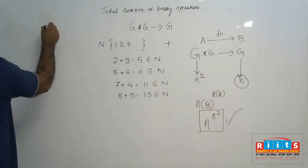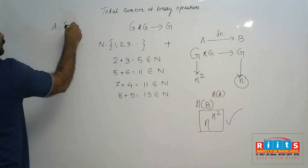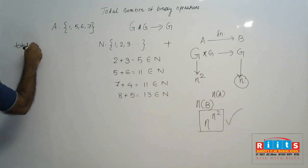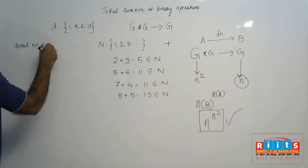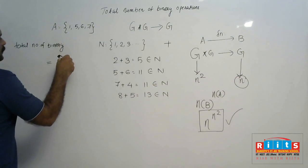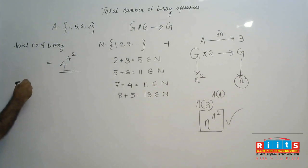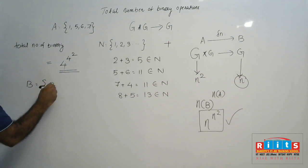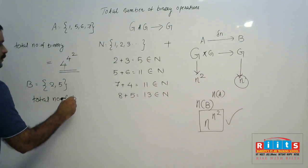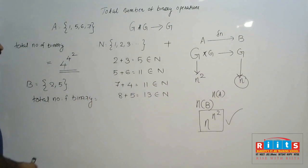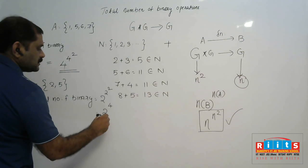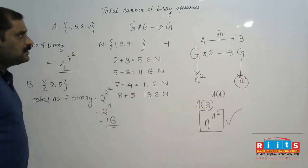For example, if set A contains {1, 5, 6, 7}, find the total number of binary operations. The total number of binary operations is 4 raised to 4 squared. Now suppose set B contains 2 elements. Then the total number of binary operations is 2 raised to 2 squared, that is 2 raised to 4, which equals 16.